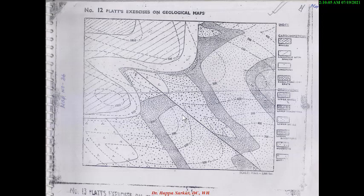First of all, you identify or calculate the elevation of this map. The highest elevation is 1000 feet, then 900, 800, 700, 600, 500, 400, 300. The regional direction of this map is northwest to southeast.